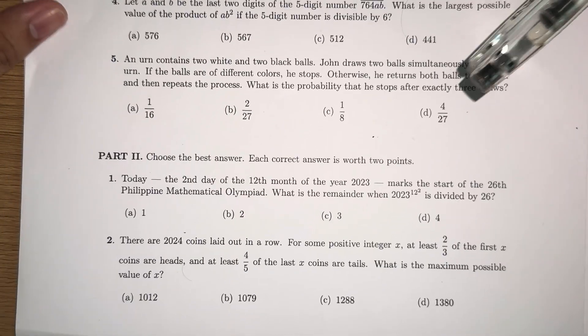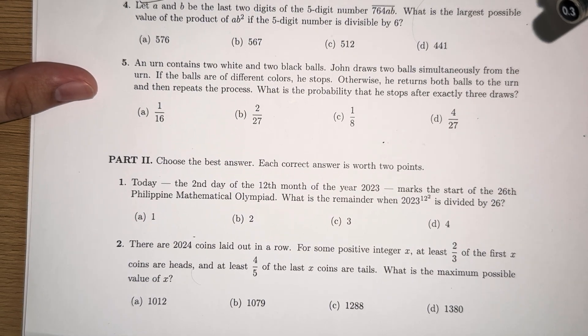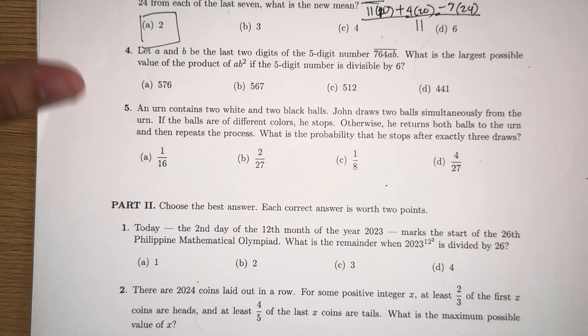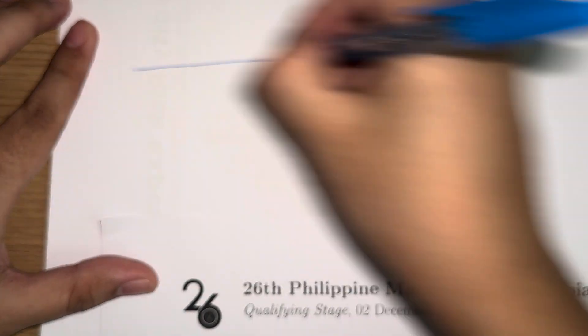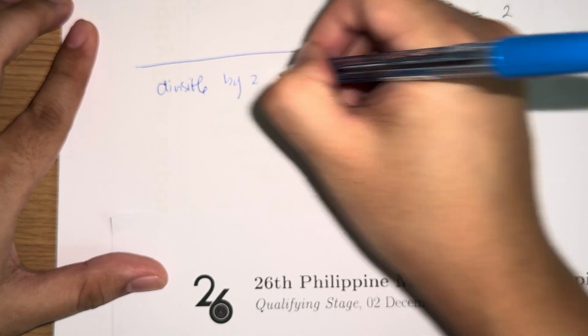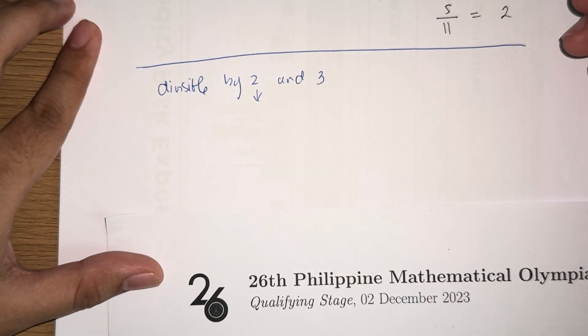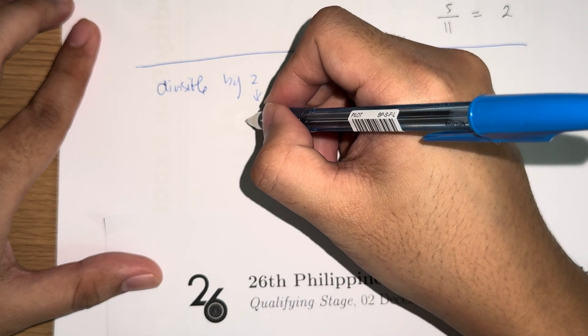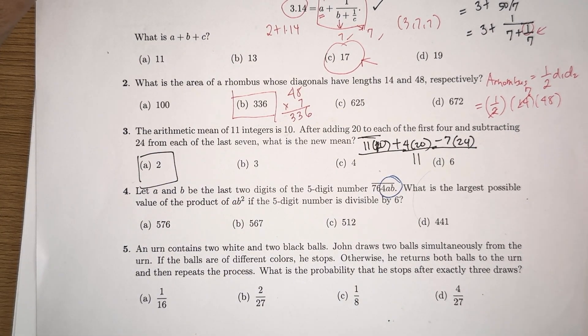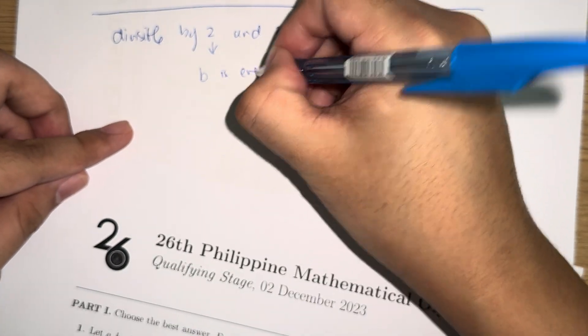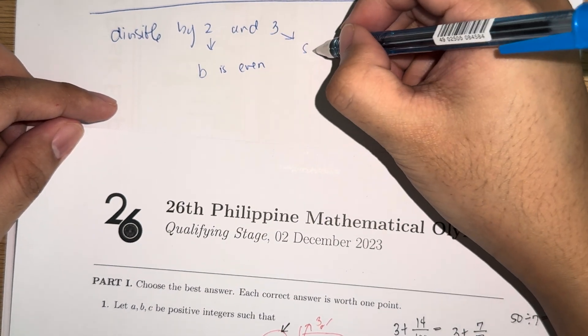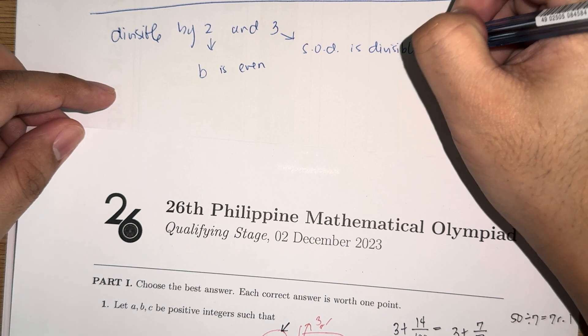Let's answer number 4. Let A and B be the last two digits of a five-digit number, 764AB. What is the largest value of the product AB squared, if the number is divisible by 6? Now to answer this one, we recall the divisibility rule for 6. And the divisibility rule for 6 is that the number must be divisible by 2 and 3. How is a number divisible by 2? The last digit must be even. So B must be even. To be divisible by 3, sum of digits is divisible by 3.